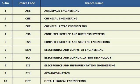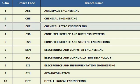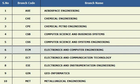The first one is ASC — Aerospace Engineering, CHE — Chemical Engineering, CPE — Chemical Petro Engineering, CSB — Computer Science and Business Systems, CSS — Computer Science and Systems Engineering, ECM — Electronics and Computer Engineering, ECT — Electronics and Communication Technology.